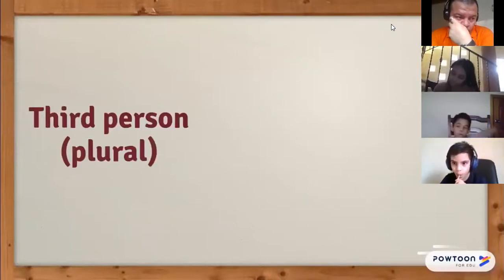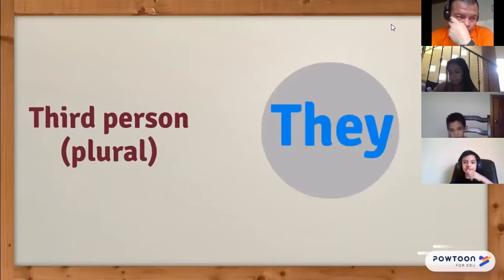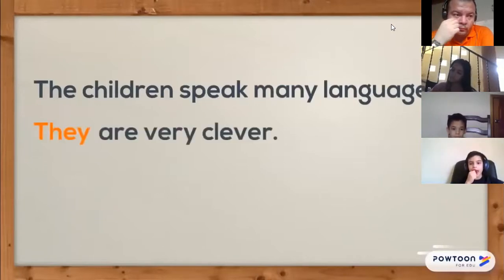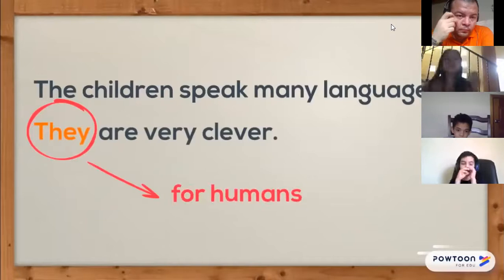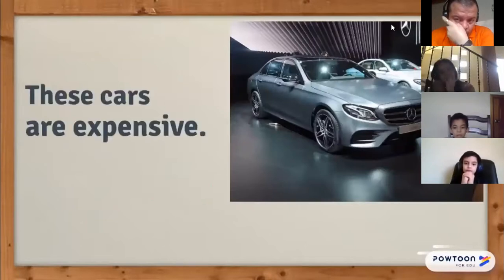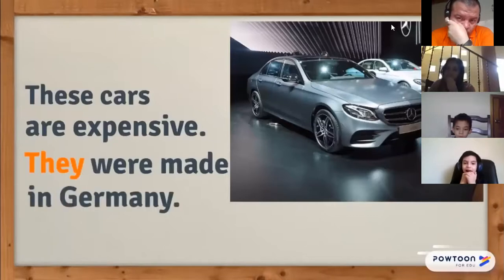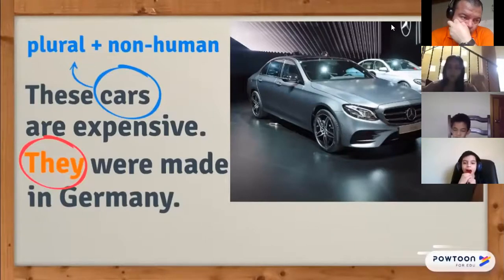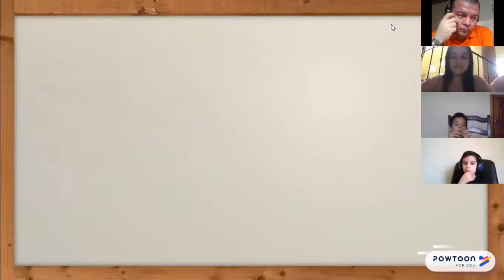As for the subject pronoun in the third person plural, we use 'they.' For example: 'The children speak many languages. They are very clever.' In this example, 'they' is used for humans. Now look at this example: 'These cars are expensive. They were made in Germany.' Here 'they' is used in place of the noun 'cars,' which is plural and non-human.